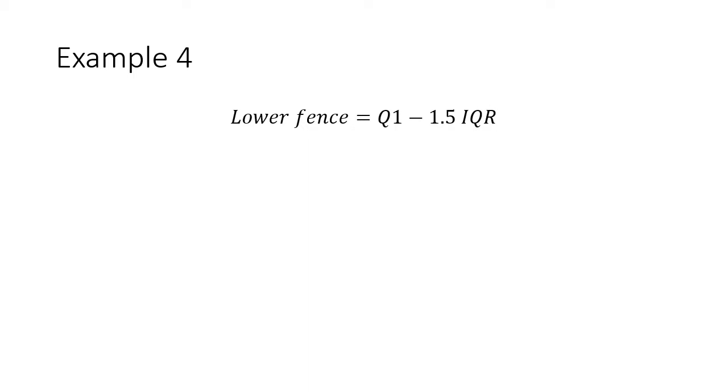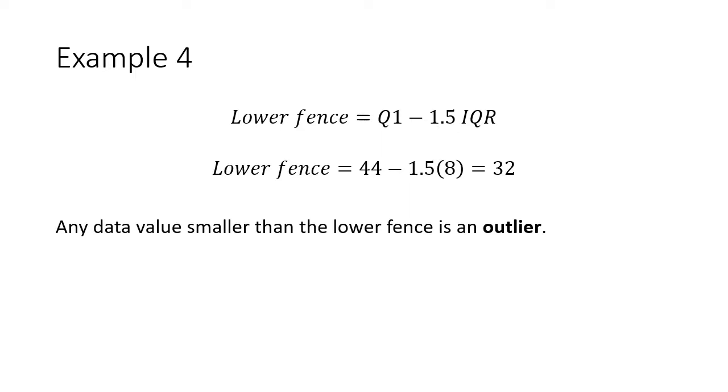Our lower fence. We would start at Q1, and then we would subtract one and a half times whatever our IQR is. In this case, our IQR is 8. The difference between 44 and 52 is 8. Q1 was 44, and when I subtract one and a half times 8, I'm going to get 32. This is a good place to review order of operations. Always do that multiplication first. One and a half times 8 is 12. And then 44 minus 12 gives us that 32. This means that any data value smaller than that lower fence is an outlier and would skew our data. If we look at that raw set of data, my minimum value was 16. That means that total of 16 points is an outlier. That means that that Super Bowl of the Patriots versus the Rams was statistically an outlier and way more boring than a Super Bowl should ever be.